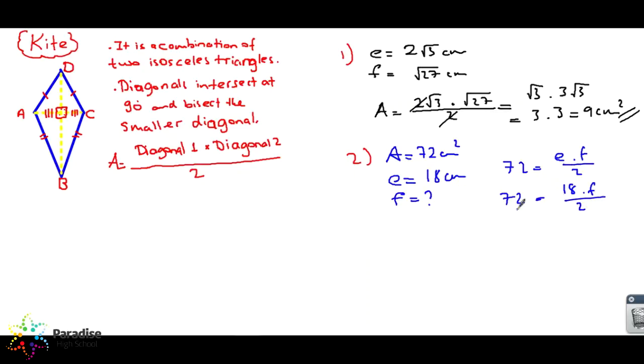I can simplify 18 and 2. 72 is equal to 9F. Both sides divided by 9 - 8 centimeters is the length of the other diagonal.